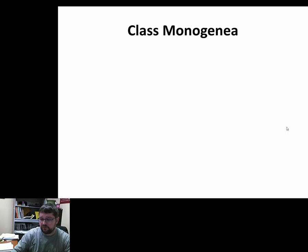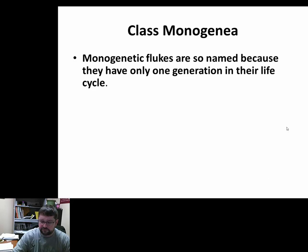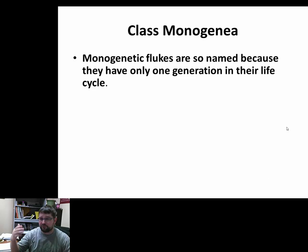Now we're going to talk about Monogenea — the single host, single life cycle parasites. Monogenetic flukes are their common name. They have one generation, one life cycle, typically one host, and are not going through multiple phases.